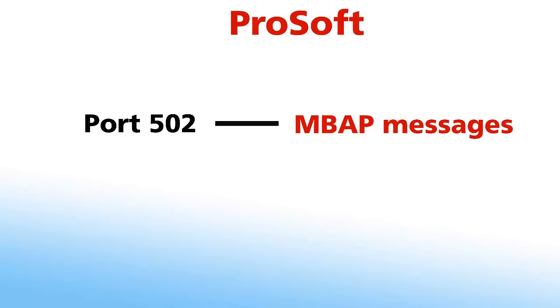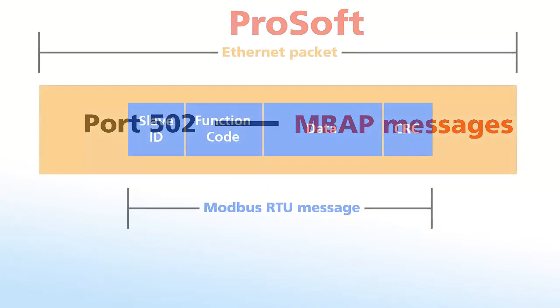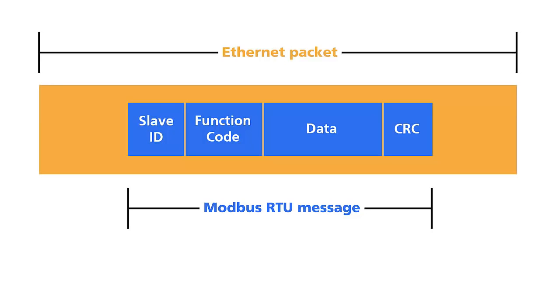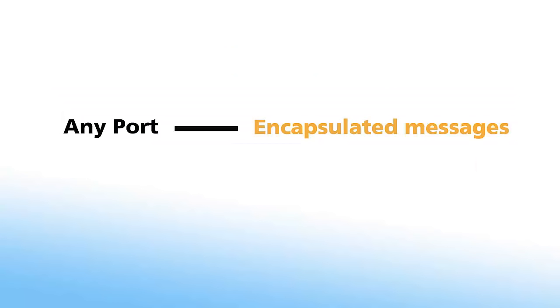Modbus uses port 502 for TCP IP communication. This is important if your data needs to go through a firewall. ProSoft uses that port for MBAP messaging specifically. Modbus serial messages can also be sent as regular RTU messages encapsulated inside an Ethernet TCP IP packet. Encapsulated messages can use any port, but ProSoft products are set to use port 2000 by default.